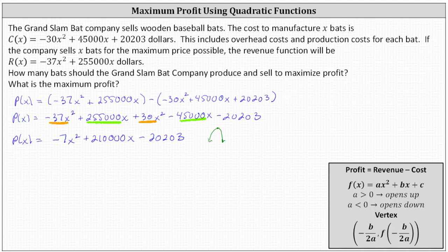Recall when we have a quadratic function in general form, or the form F of X equals A X squared plus B X plus C, we can find the vertex by determining the ordered pair negative B divided by two A comma F of negative B divided by two A. So let's first find the X coordinate of the vertex, which again will give us the quantity the bat company should produce and sell to maximize profit.